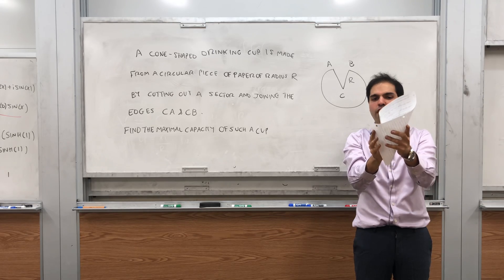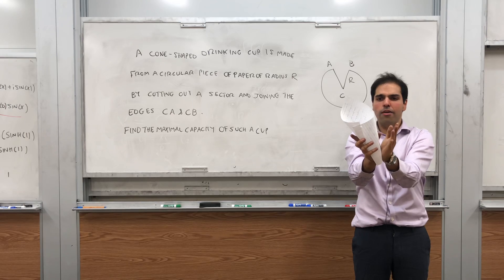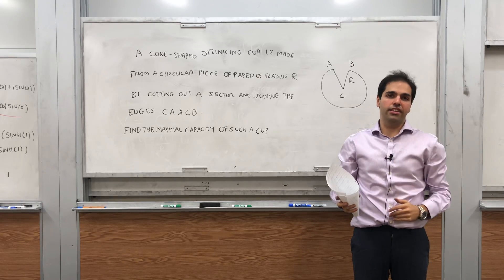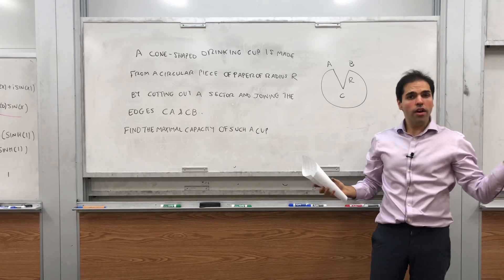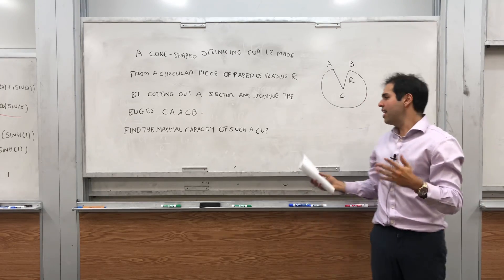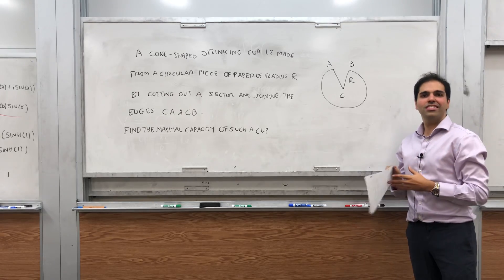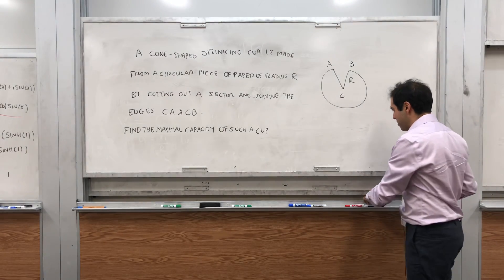Or it could be very obtuse, where it's like a big cup with a big radius, but the height isn't very big. So there is this interplay between the height and the radius, and the question is which one is optimal. So it's a classic optimization problem.